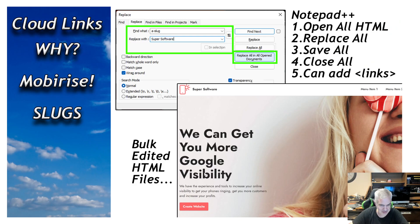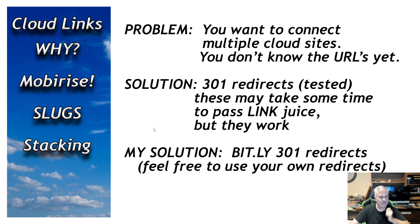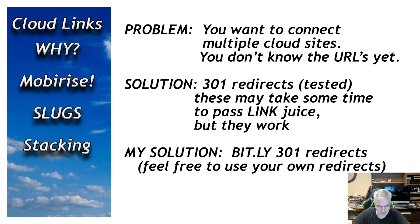So this is the starting point — A slug, B slug, C slug — and this is the result: 'Super Software — Get More Google Visibility,' with a little paragraph of text. The site looks good. You upload it and you're done.